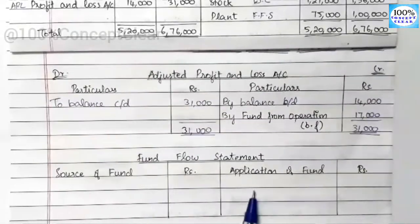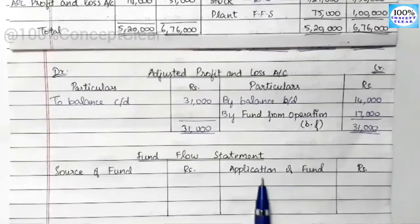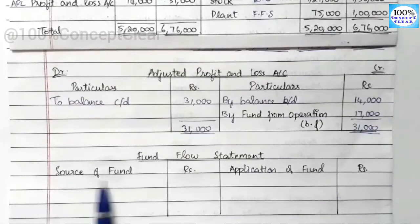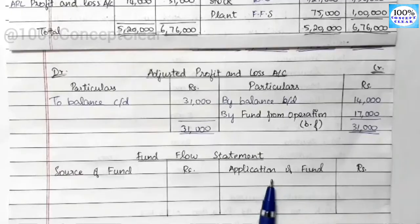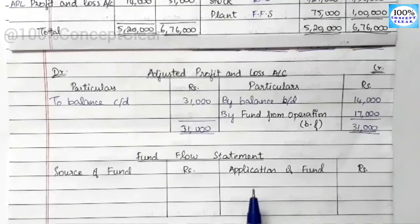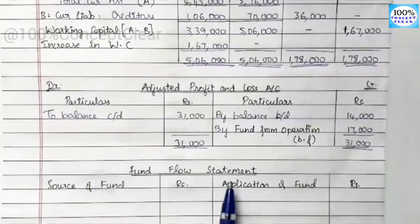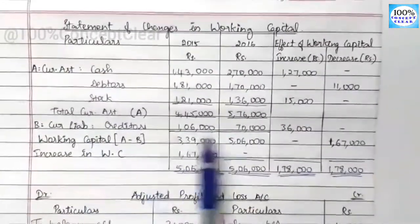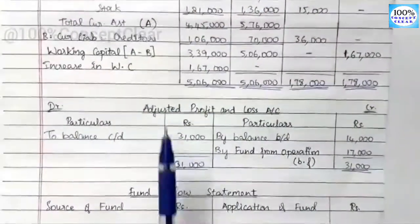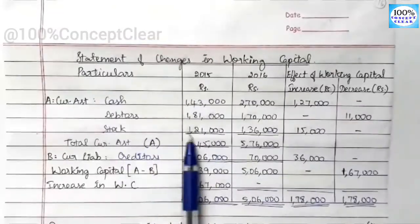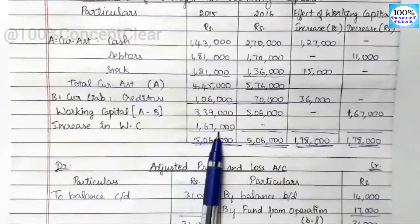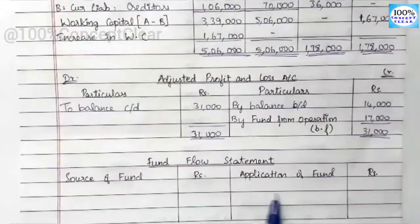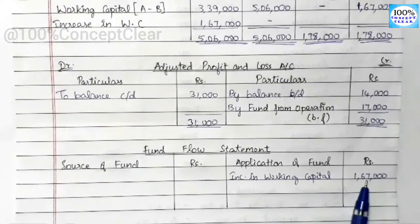Now we open the fund flow statement. The format has sources of funds and applications of funds. Sources represent where our funds come from; applications represent where our funds are spent or used. From the statement of changes in working capital and the adjusted P&L account, the increase in working capital is 1,67,000. This goes into the applications side of the fund flow statement.